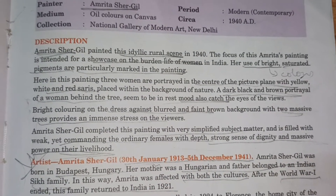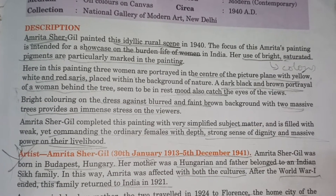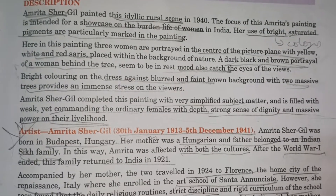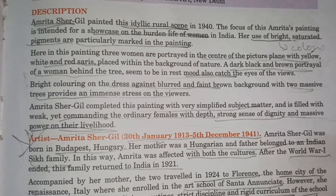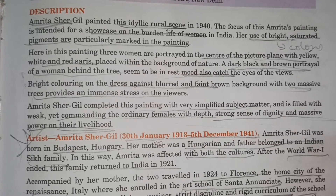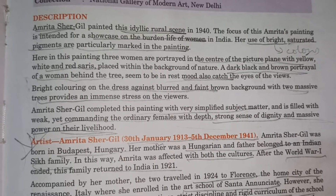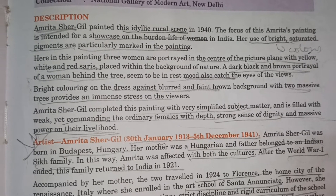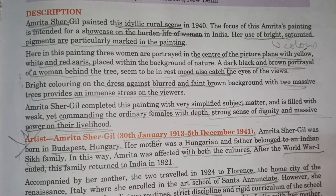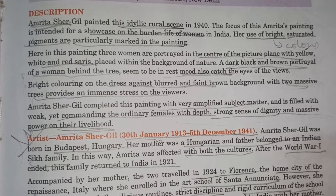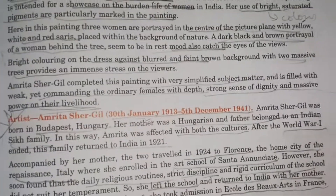Her use of bright, saturated pigments is particularly marked in this painting. Three women are portrayed in the center of the picture plane, dressed in yellow, white, and red saris, and black and white saris. One figure is placed within the background of nature. A dark black and brown pot, and the tail of a woman behind a tree, also catch the eyes of the viewer.